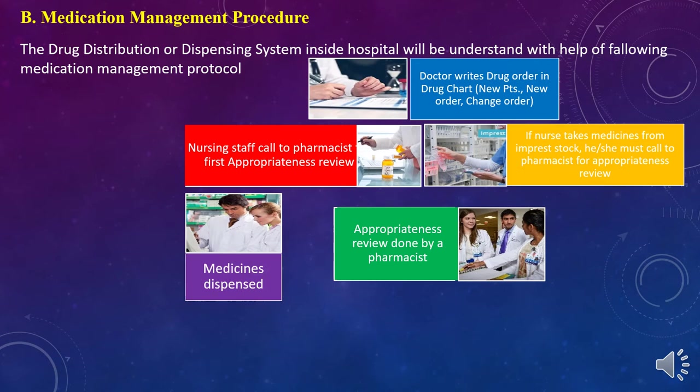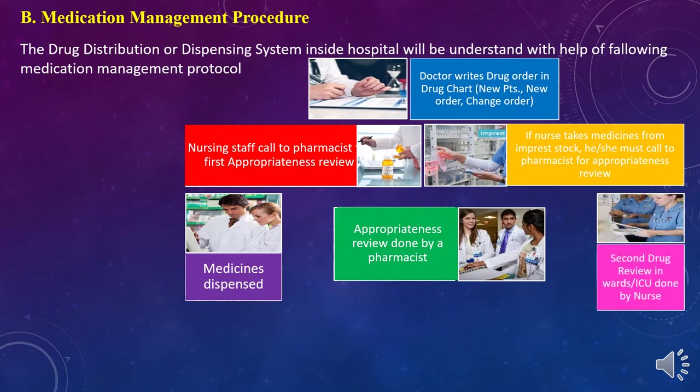After approval during the appropriateness review, the order or request is sent to the concerned pharmacy department, where they receive the order in the form of an indent and dispense the medicines. After dispensing, the medicines are packed and sent back to the nursing station. Before administration, a second appropriateness review is carried out by the nursing staff to check whether the medicines dispensed match the order.